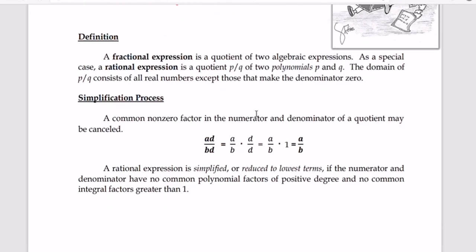The main definition of what we call a rational expression is that it is a quotient of two algebraic expressions. As a special case, a rational expression is a quotient p over q of two polynomials p and q. The domain of p over q consists of all real numbers except those that make the denominator zero.